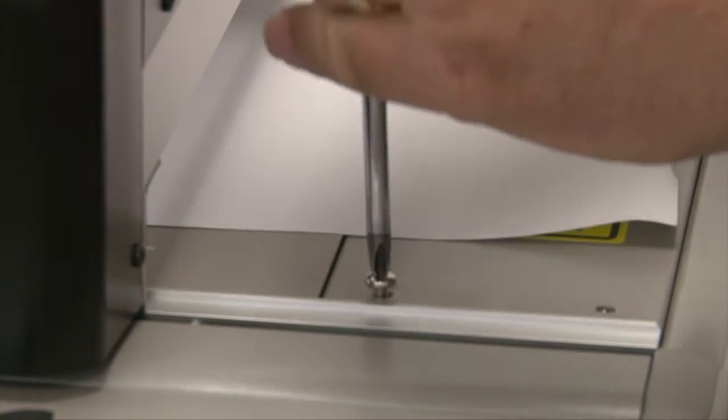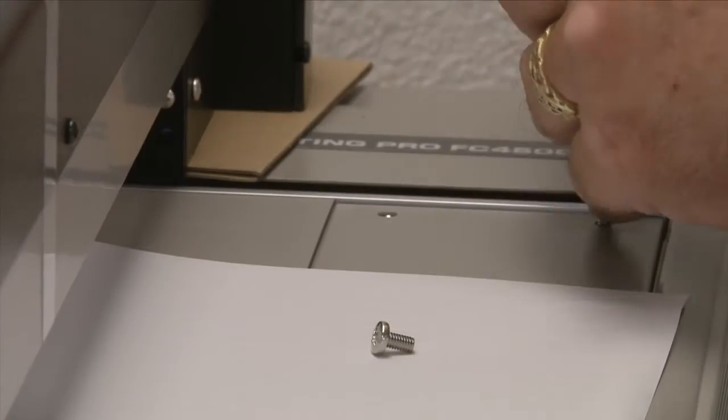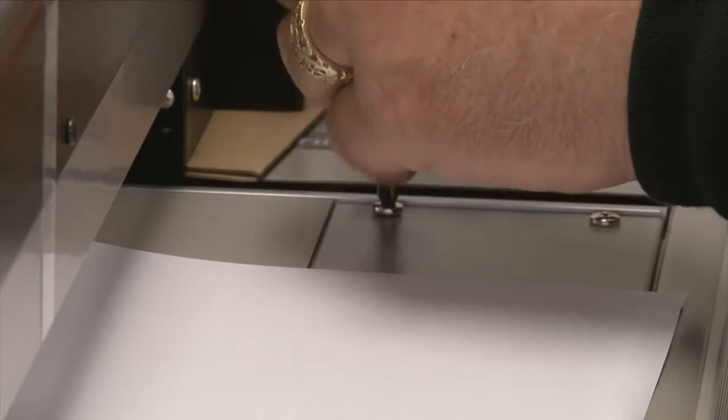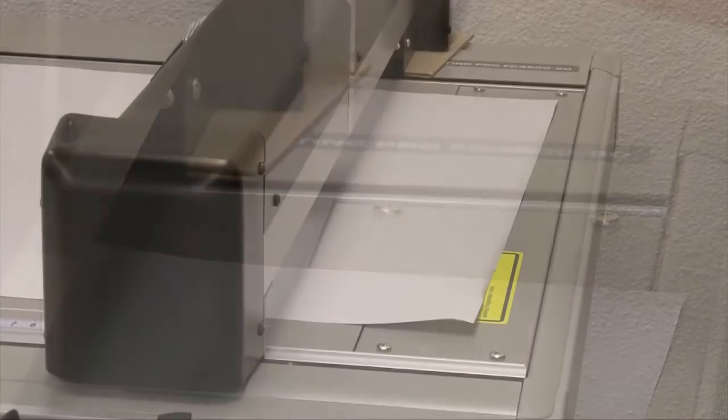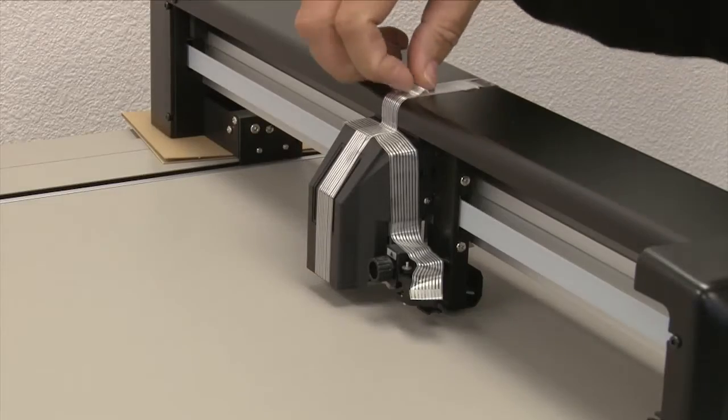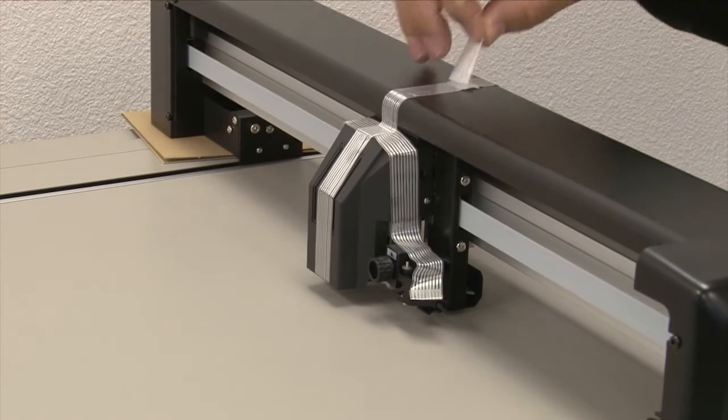Once the base clamps are removed, place the screws back in their original holes. After removing the Y-bar clamps, remove the rest of the packing such as the tape holding the tool head in place.